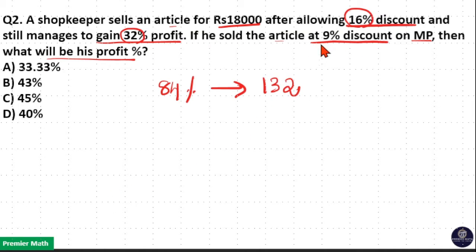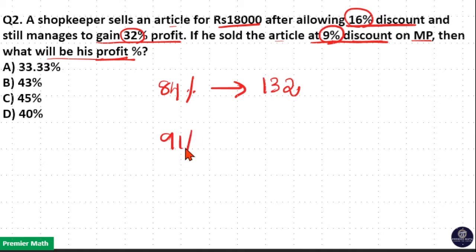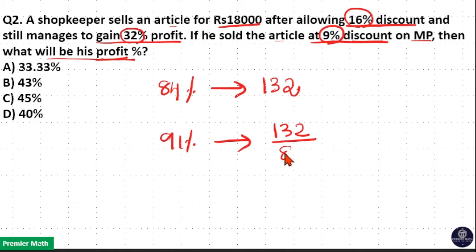Now, our question is: if 9% is the discount, then what will be the profit? 9% discount means 100 minus 9, which is 91%. We need to find out the profit for this 91%. If 84% gives 132, then 91% will give 132 divided by 84, multiplied by 91.